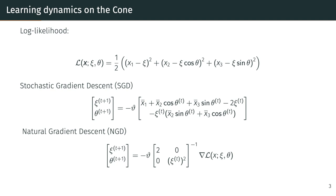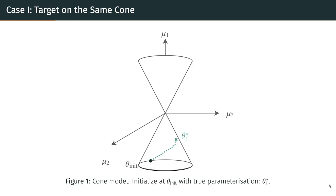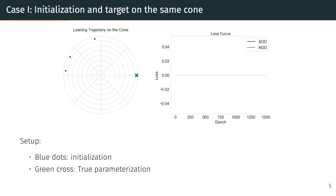To define the learning dynamics, we start from the log likelihood and then we can derive updates for stochastic gradient descent and natural gradient descent. For our first experiment we consider the following case: the initialization of the parameters and the true parameterization are on the same cone as illustrated in figure 1. On the left hand side we see a top view on the cone. The blue dots show the initializations and the green cross gives the true parameterization.